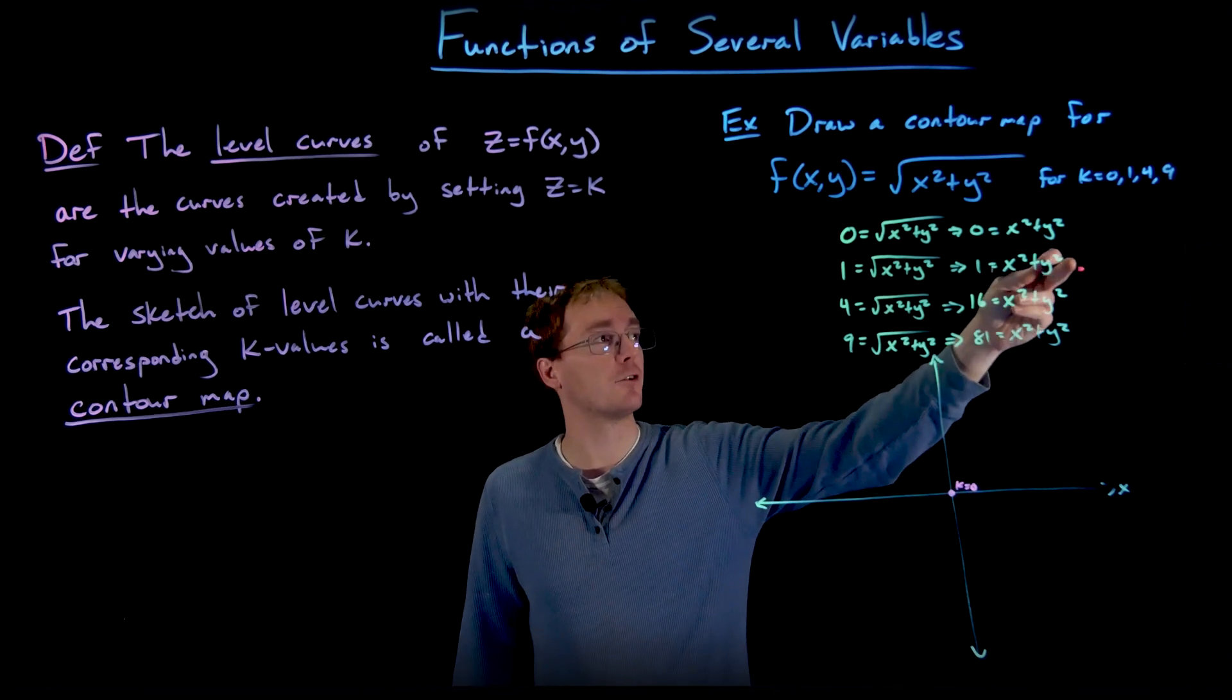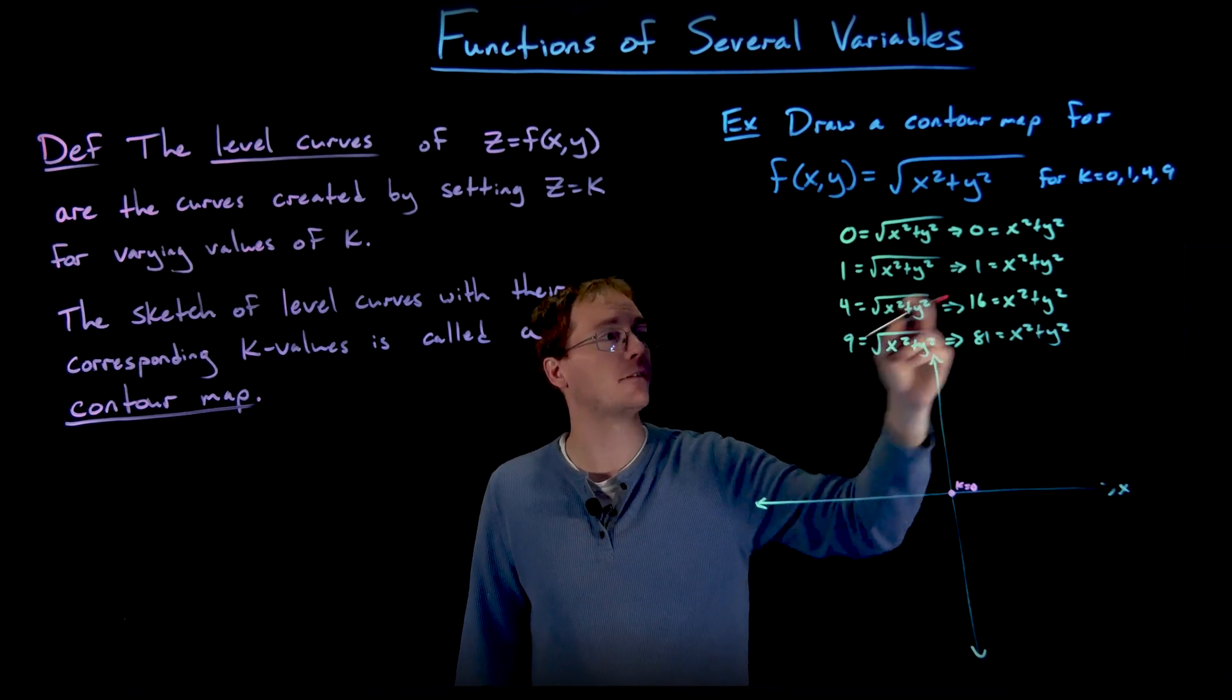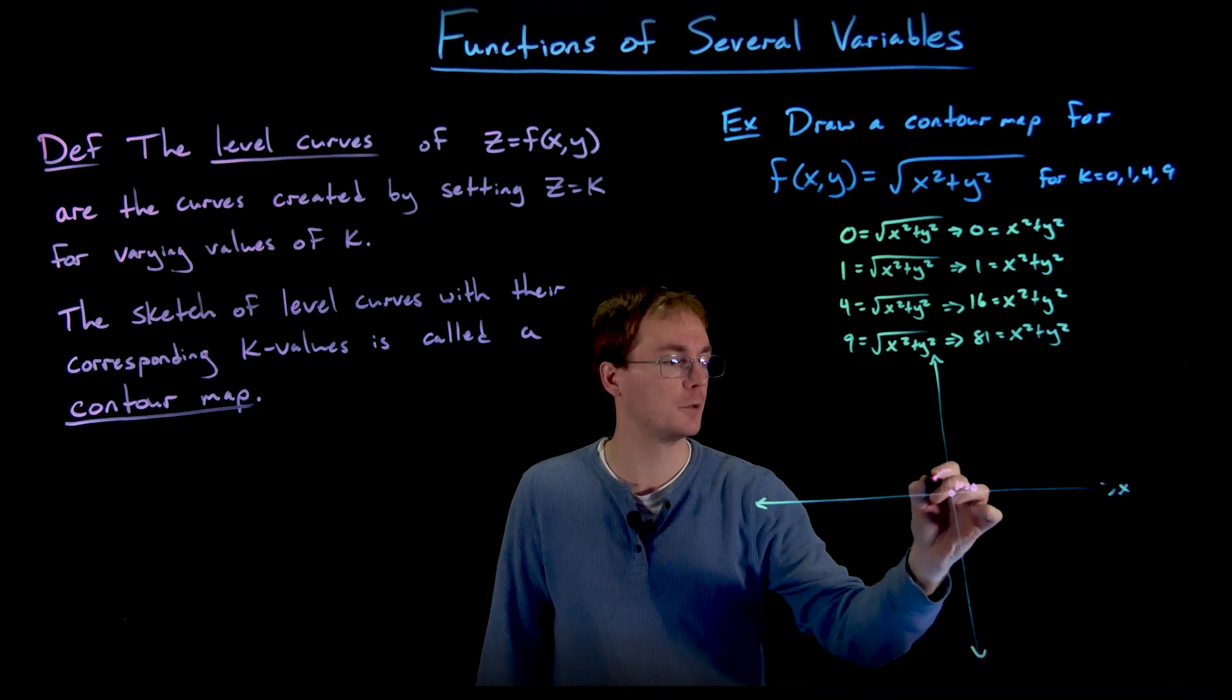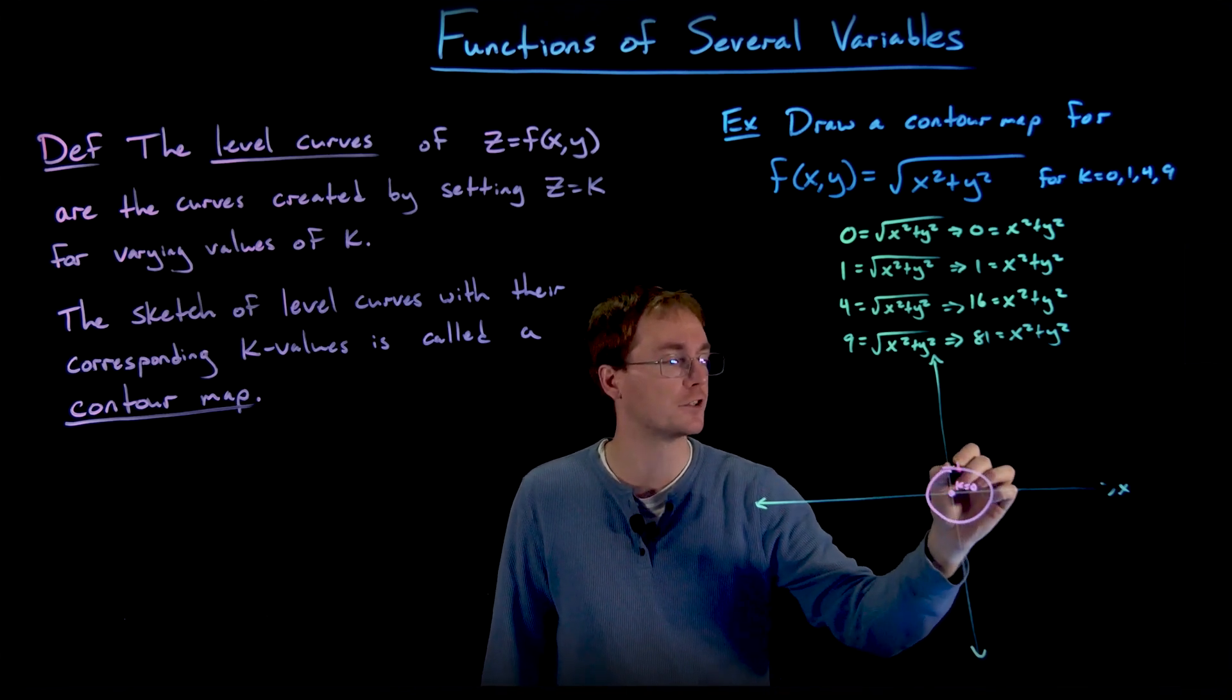All right, so our next level curve corresponds to k = 1. And that gave us the equation 1 = x² + y². We should recognize that as the equation for our unit circle.